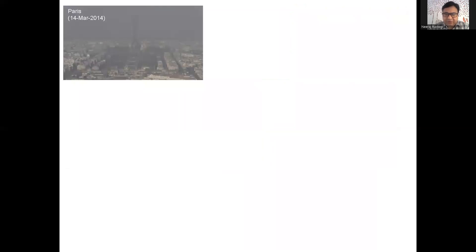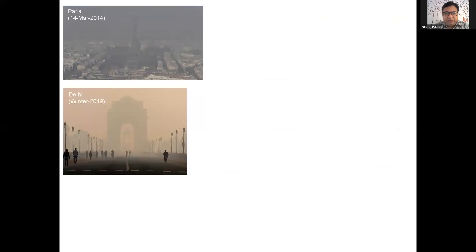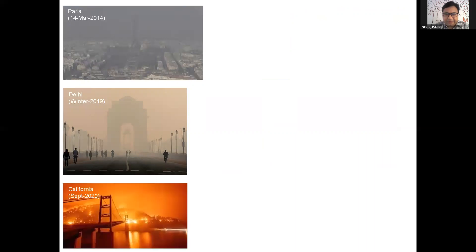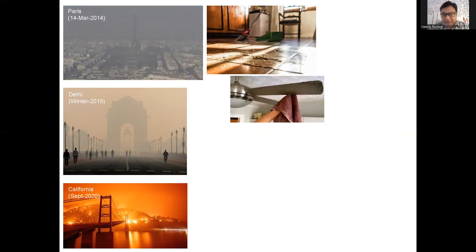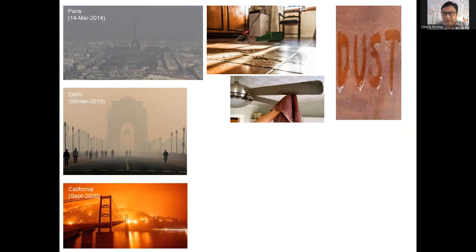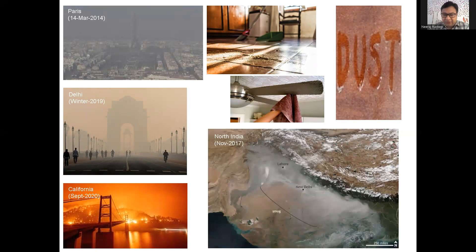Let us see some more pictures. Here we see the Eiffel Tower, a picture taken on 14th March 2014. Then you see India Gate, winter 2019. Then this is California — just two years back in September there was a forest fire and this kind of picture was taken by people. And then this is anybody's home and we can see there is a lot of dust — something we see very often, every week or two weeks on our fence, sometimes so much that you can write on it. And then this is a picture of North India from satellite. Again there is something common among all these pictures — that is aerosols.